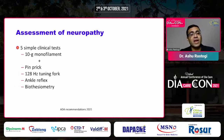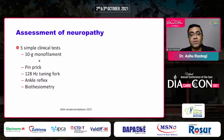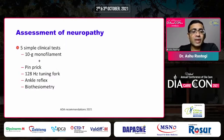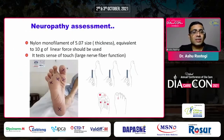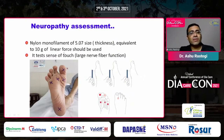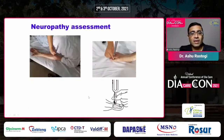Never forget to examine annually for neuropathy using simple clinical tests. The 10-gram monofilament test is a validated tool to identify patients at risk of ulcers. In addition, assess small fiber neuropathy using pinprick sensation and large fiber neuropathy using the 128-Hz tuning fork. The monofilament is examined at five areas of the foot — you apply the nylon filament until it buckles and ask whether the patient can feel it.